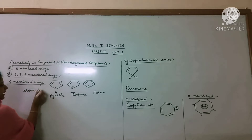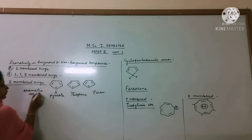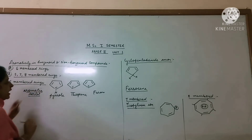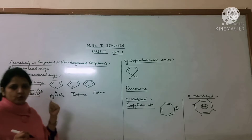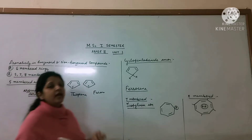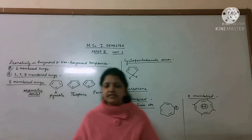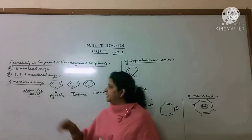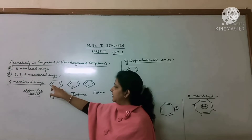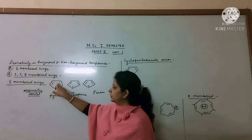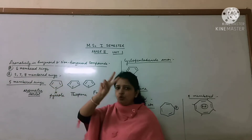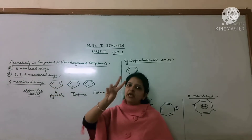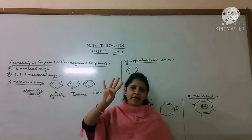You will remember that in these molecules there is an aromatic sextet present. The aromatic sextet will be constituted as follows: there are 2 pi bonds, so there are 4 pi electrons already present in the ring.